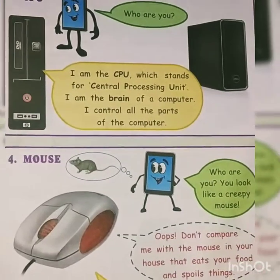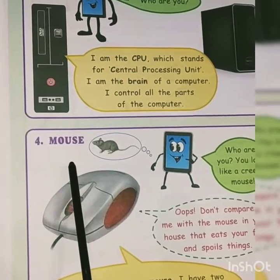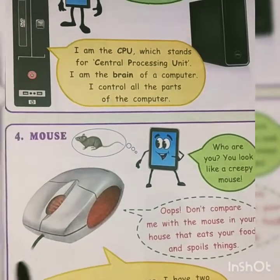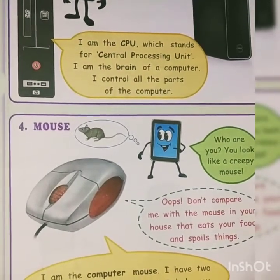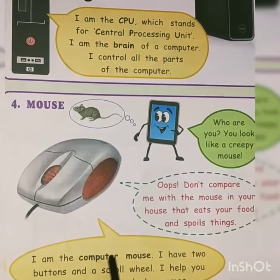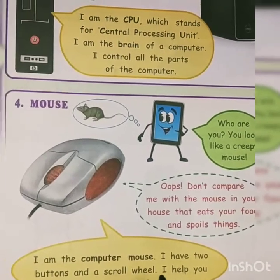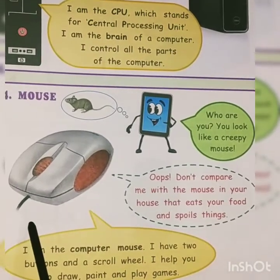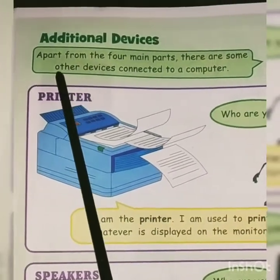Next is the mouse. Someone is saying, who are you? You look like a creepy mouse! Yes, in a computer there is a mouse which looks like a mouse. The mouse introduces itself: I am a computer mouse. I have two buttons and a scroll wheel. I help you to draw, paint, and play games. With the help of the mouse we can control the buttons.